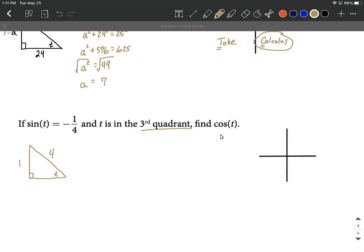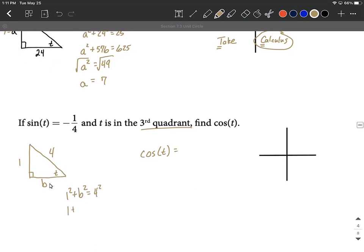Okay, to get cosine of t, which is the ultimate goal here, cosine of t is going to require adjacent over hypotenuse based on SOHCAHTOA. So we need to find this adjacent side. I'm going to label that with a b. Could have picked a or b, doesn't really matter. But the Pythagorean theorem says one squared plus b squared equals four squared, or a squared plus b squared equals c squared, which is one plus b squared equals 16.